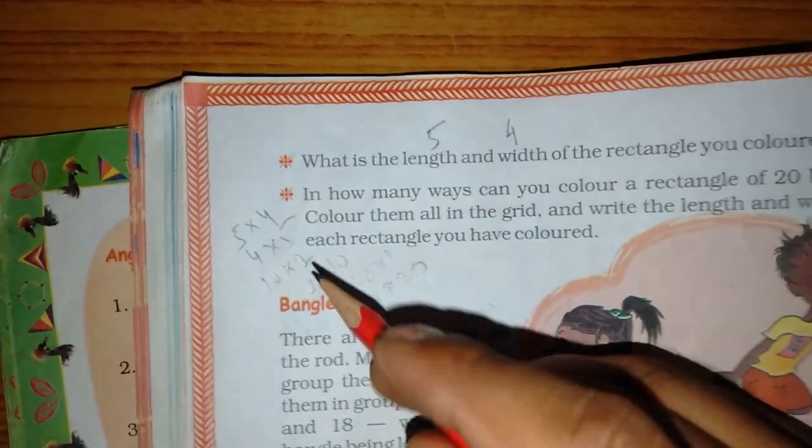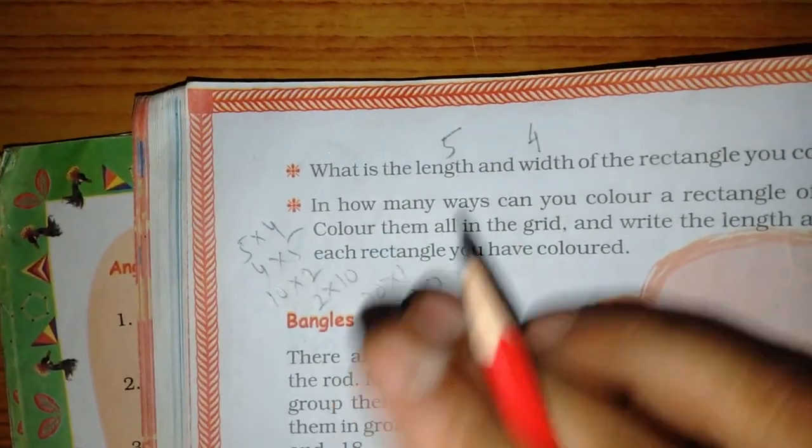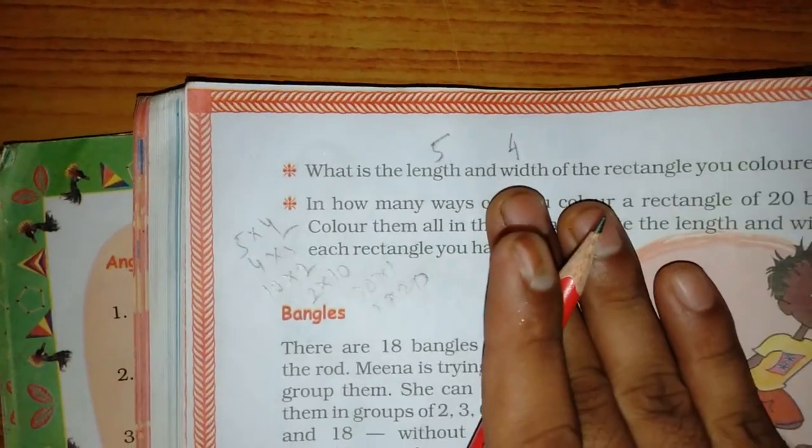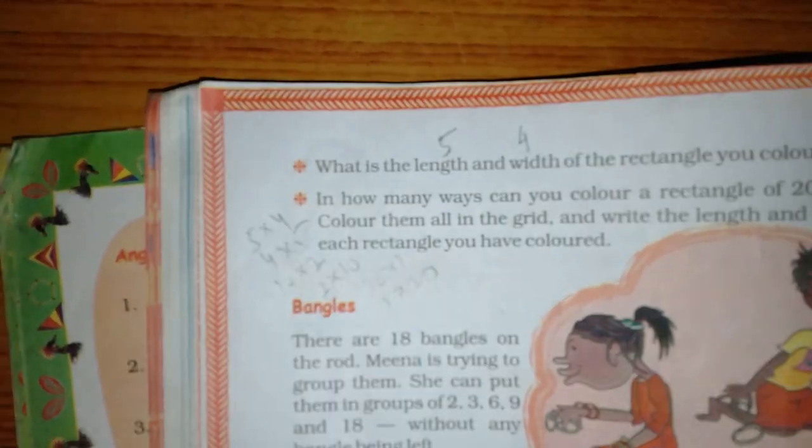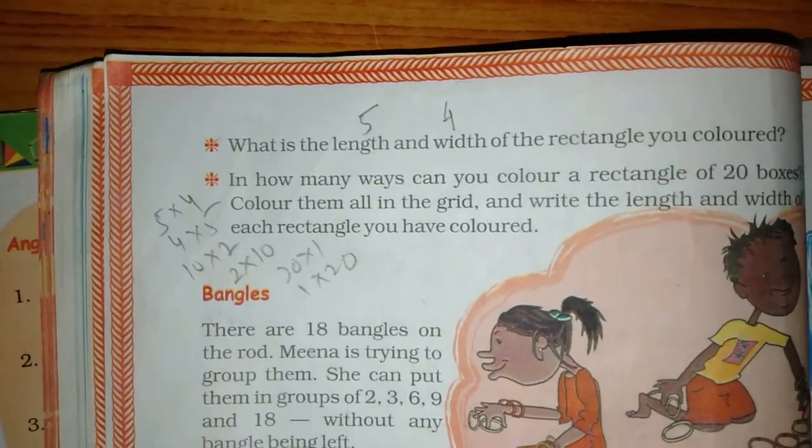When we have a sum to solve, we need to see who comes to the table. As you can tell the table, the answer will automatically come. Is it clear? Yes, sir.